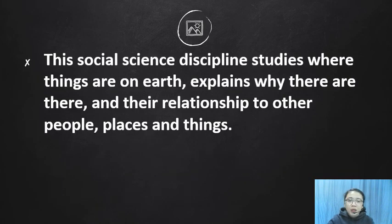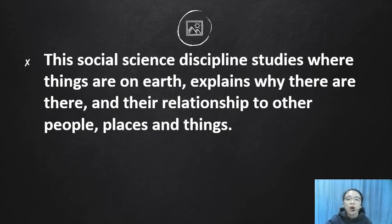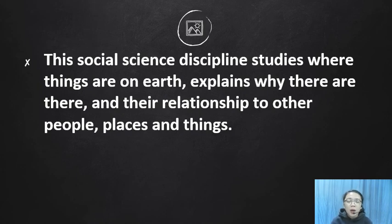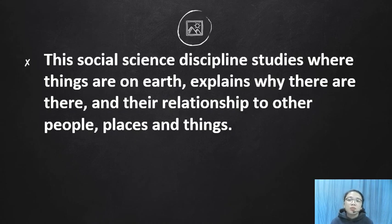Geography is a social science discipline that studies where things are on Earth, explains why they are there, and examines their relationship to other people, places, and things — specifically the connections between the natural environment and the people living in it.